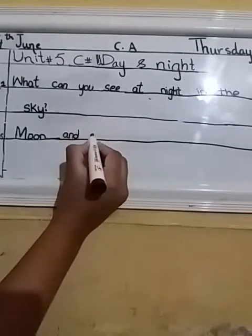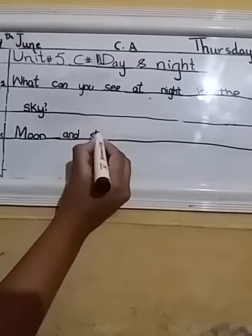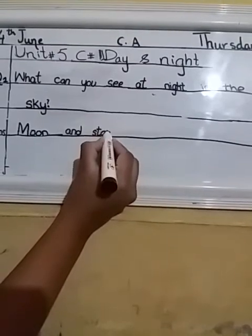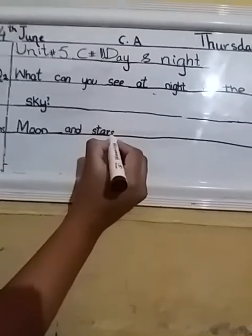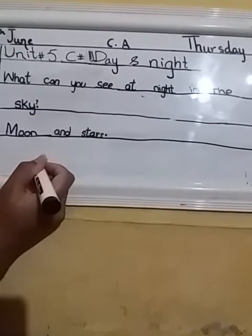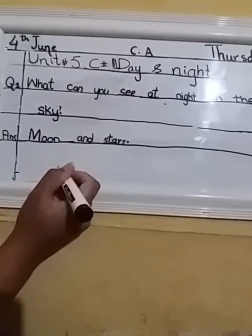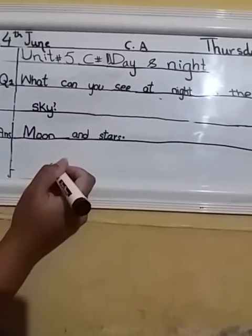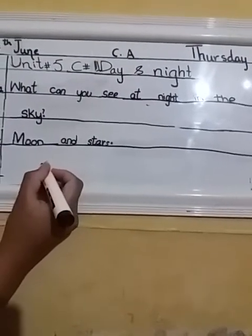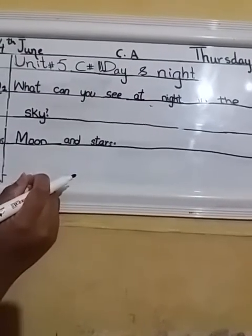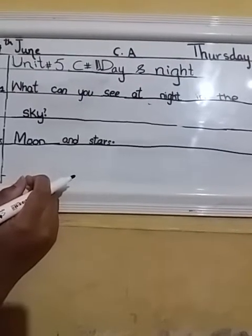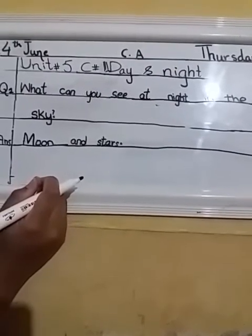Stars we will write with a small 's' because there are many stars in the sky, so star is written in lowercase and Moon is written with a capital letter. Repeating: What can you see at night in the sky? At nighttime in the sky we can see Moon and stars.